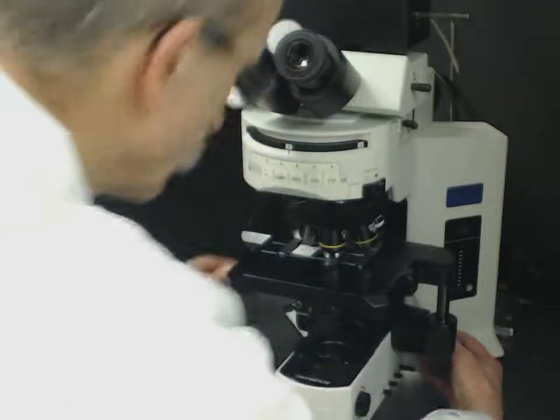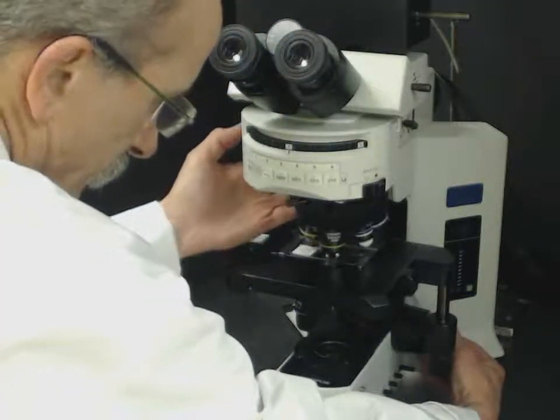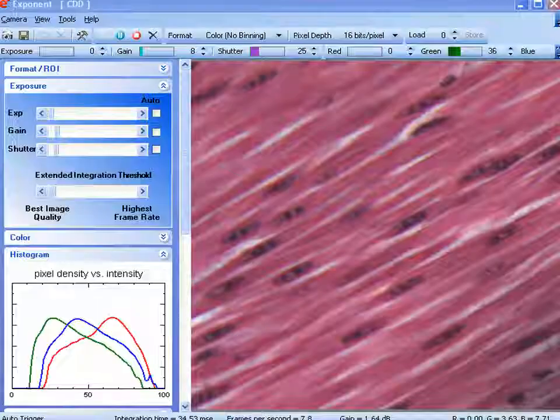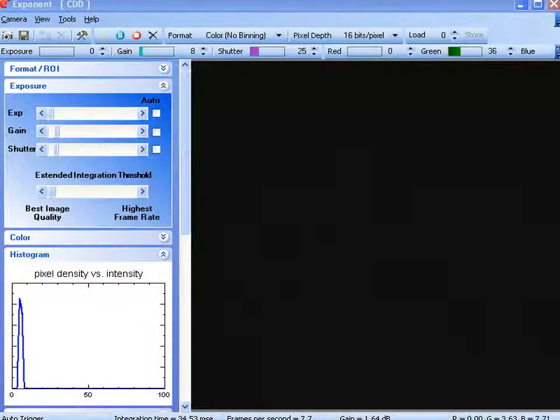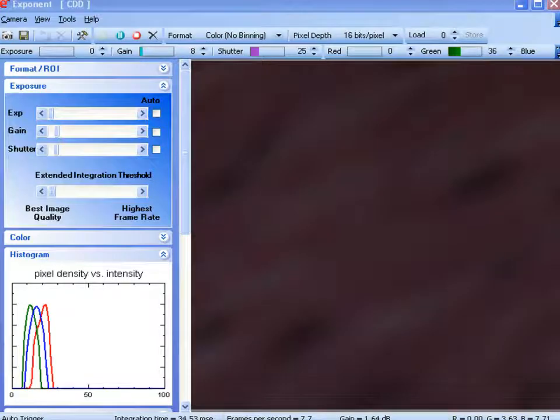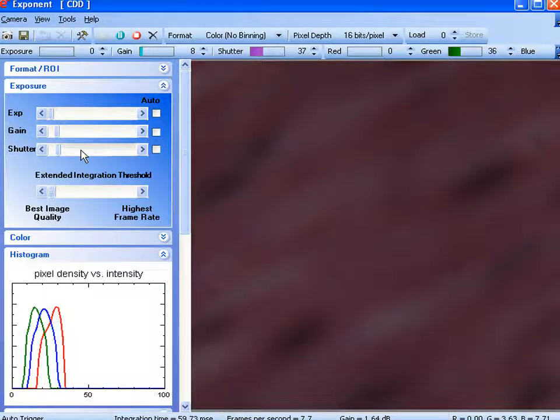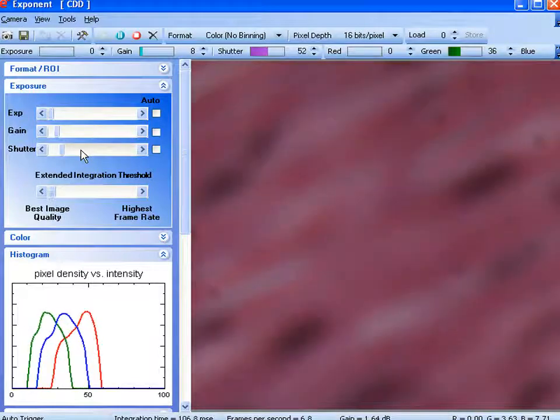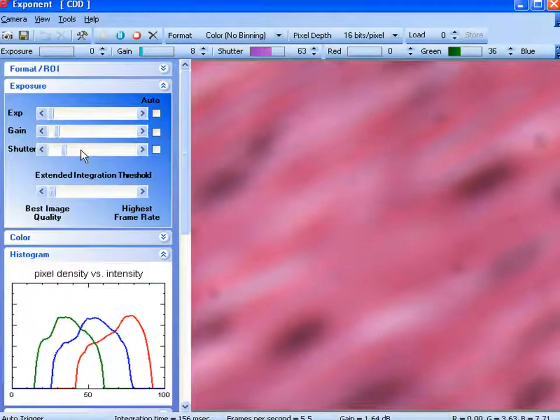When taking pictures, you will likely change objectives and the image will get darker or brighter. In the camera software, when you change objectives, here you can see the image getting darker. Rather than turn up illumination on the microscope, focus and then adjust the exposure instead.